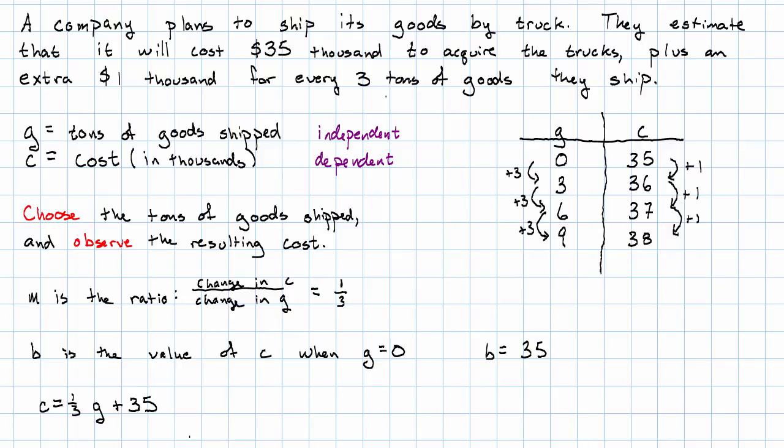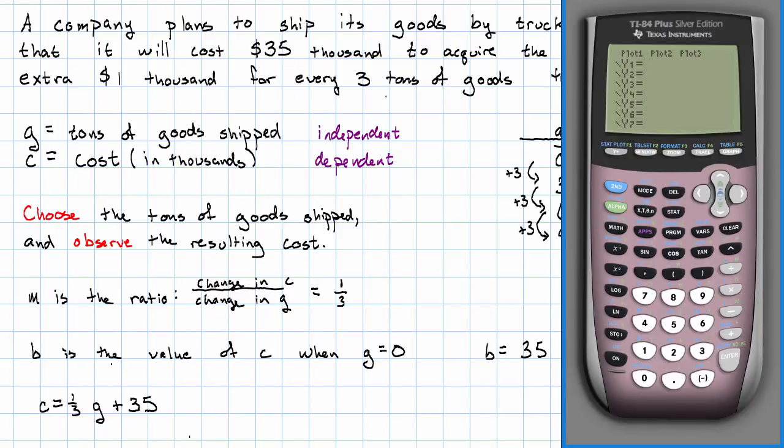Using the calculator, we can check. So c, the calculator thinks that's y. The calculator thinks every dependent variable is called y. That's 1 third. The calculator thinks every independent variable is called x plus 35.